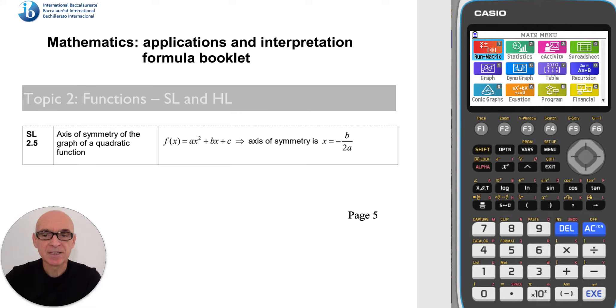The formula for the axis of symmetry of the graph of a quadratic function is given on page 5 of your formula booklet, as shown here.